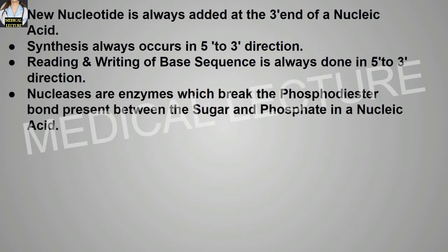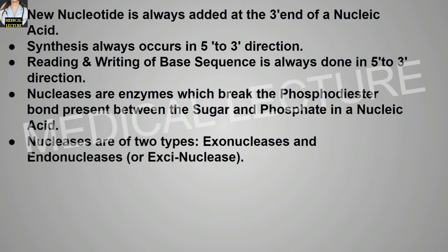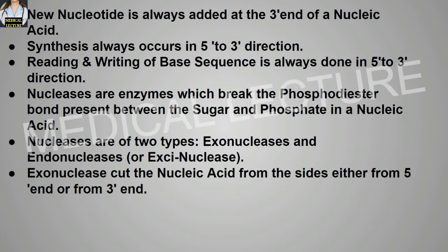Nucleases are enzymes which break the phosphodiester bond present between the sugar and the phosphate in a nucleic acid. Nucleases are of two types: exonuclease and endonuclease. Exonucleases cut the nucleic acid from the sides, either from the 5' end or the 3' end.